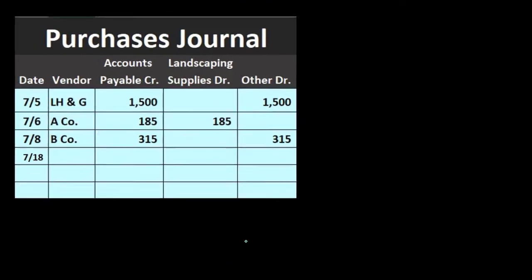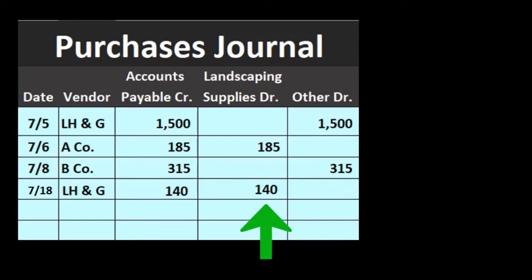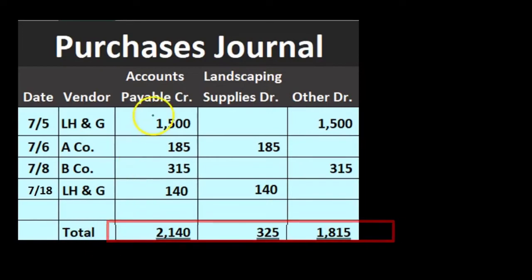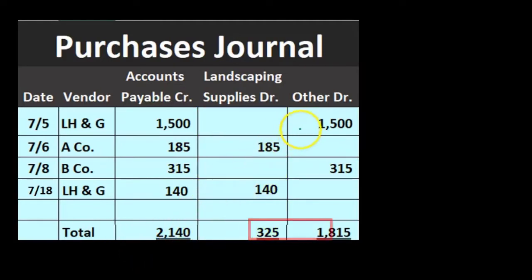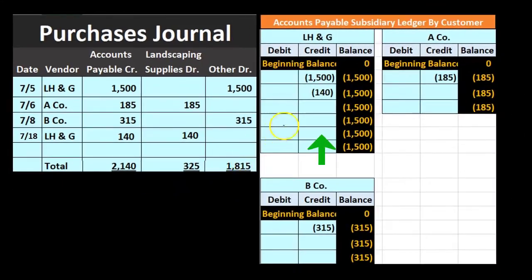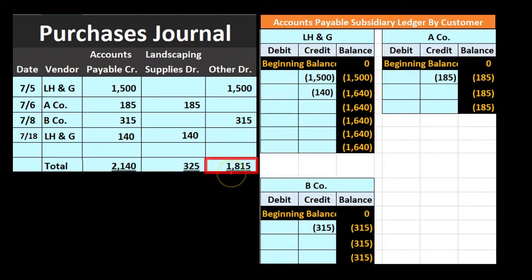On 7/18, LH&G had another purchase of $140 into accounts payable, with the other side going to landscaping supplies. Totaling the columns: $1,500 + $185 + $315 + $140 = $2,140 total accounts payable; $185 + $140 = $325 for landscaping supplies; $1,500 + $315 = $1,815 in other. In the subsidiary ledger, LH&G's balance increases from $1,500 by $140 to $1,640.